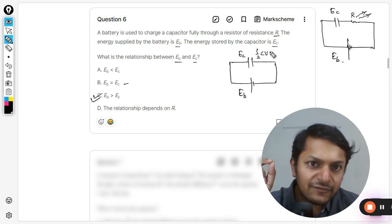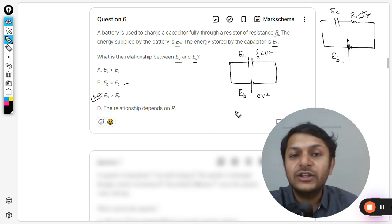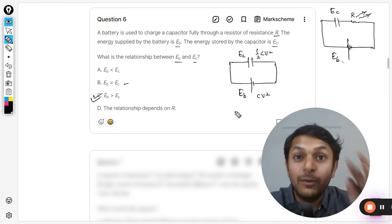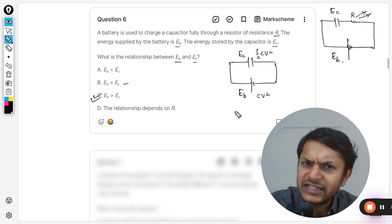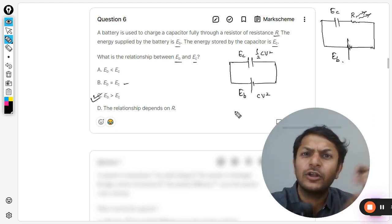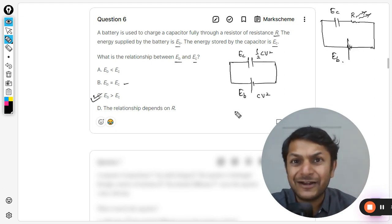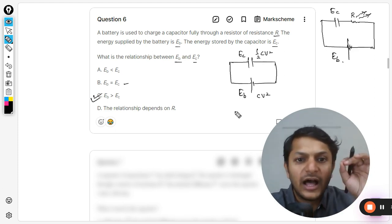And why is that? Because even in this case, if the energy stored is half CV squared, the energy provided by the battery is CV squared. So energy provided by the battery is double the energy which is stored in the capacitor. This can be proved with the concepts of physics and integration and calculus.